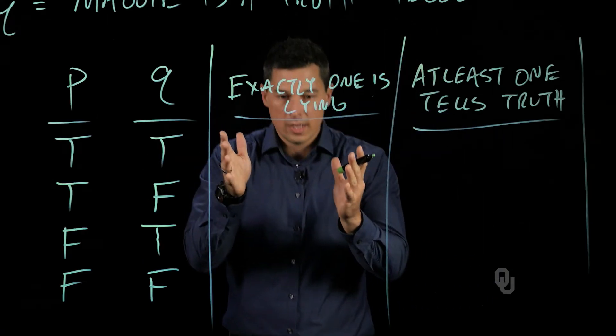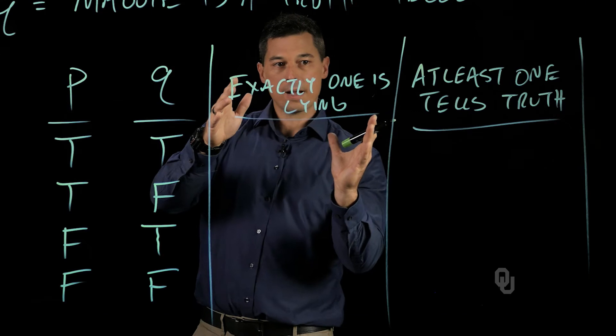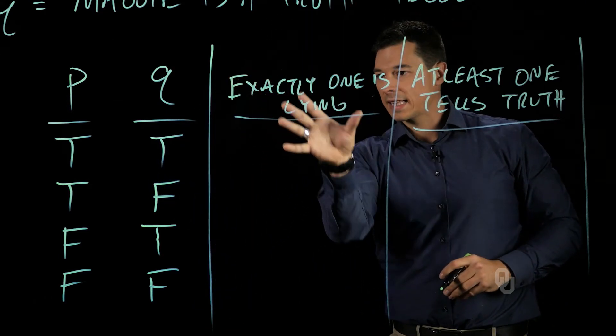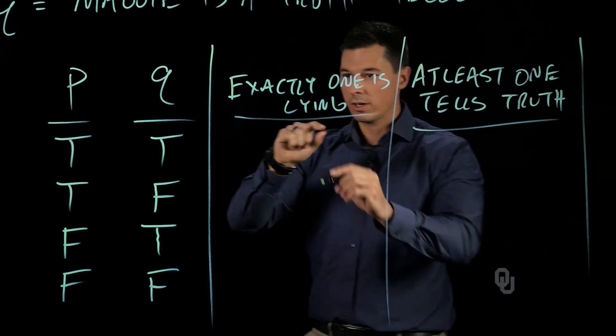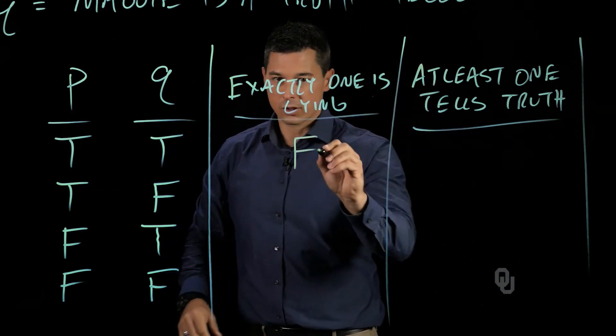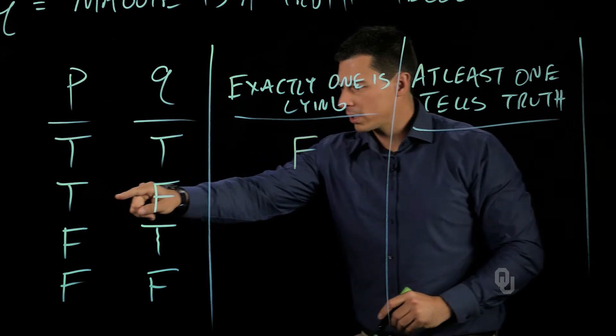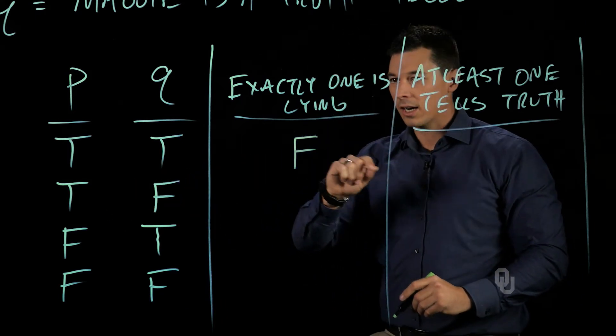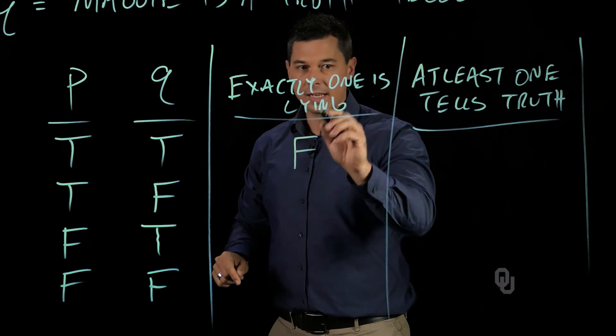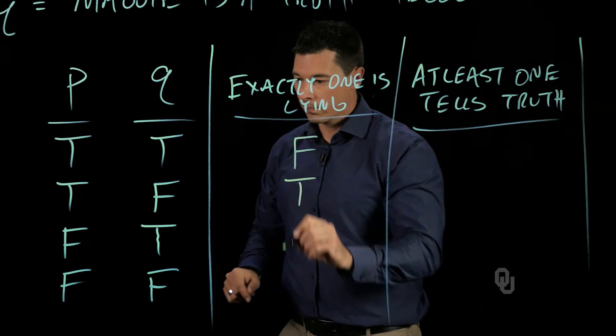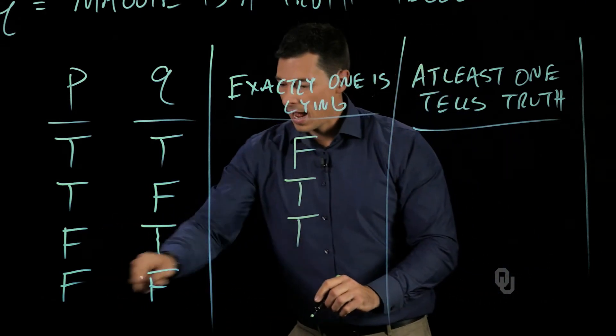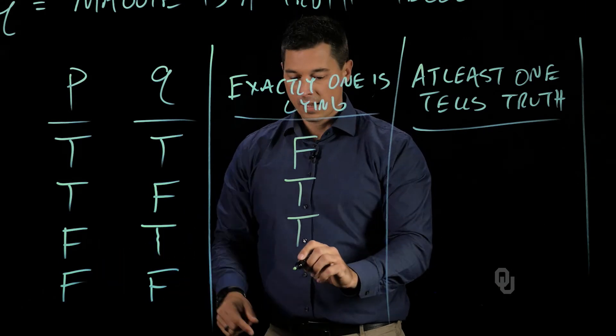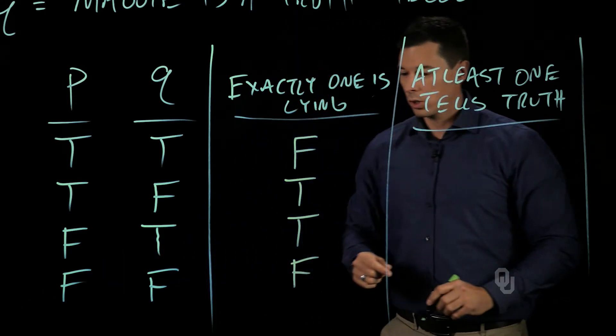So now what I want to do is to decompose the problem and think about these individually. In this case, exactly one of us is lying. We can look and see we have a truth-teller and another truth-teller. So this statement is false. We look down at the next possibility, a truth-teller and a liar. In this case, this statement, exactly one of us is lying, is true. Here we also have that that is true. And here at the last case, it's false because both individuals are lying.